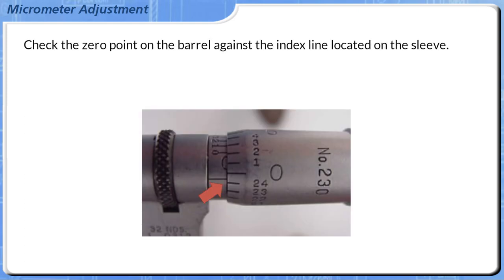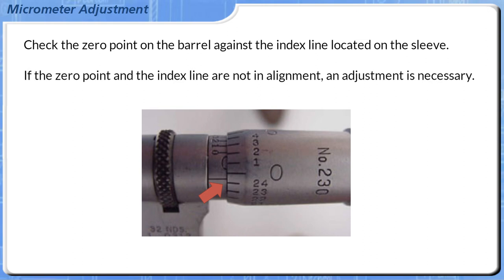Check the zero point on the barrel against the index line located on the sleeve. If the zero point and the index line are not in alignment, an adjustment is necessary.